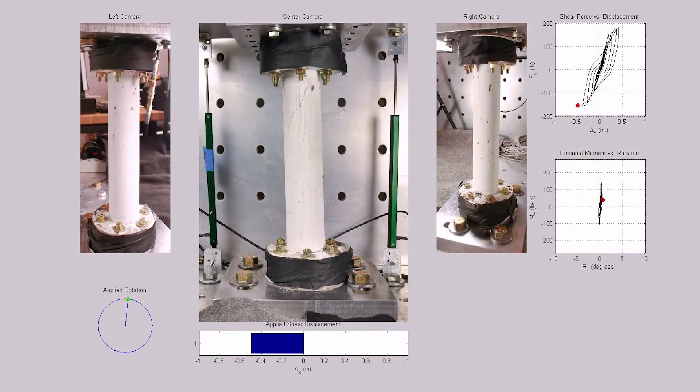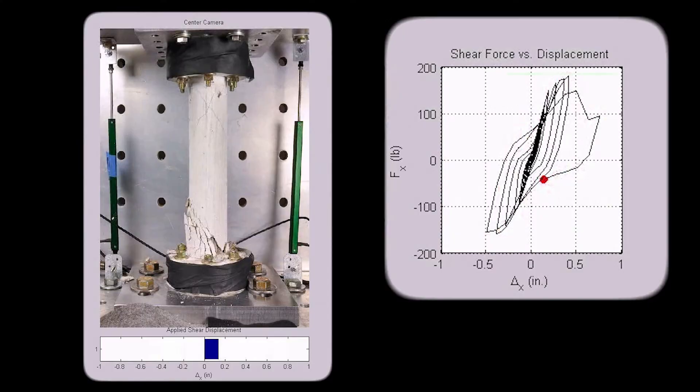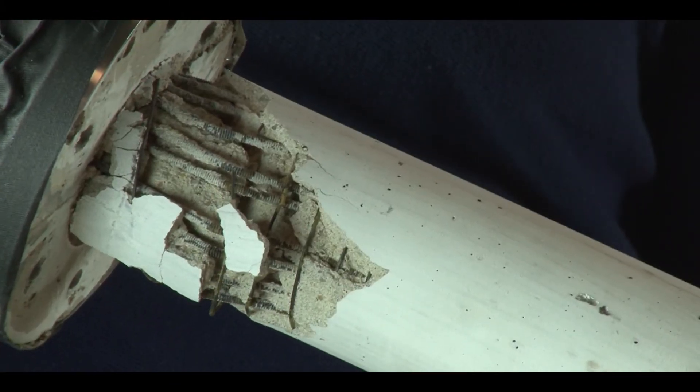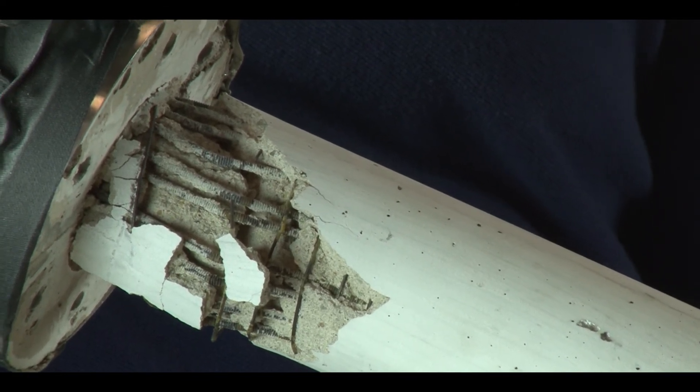This test was another highly brittle failure, which is shown by a sharp drop in the load carrying capacity of the specimen and was also accompanied by the rupturing of several strands of transverse reinforcement.